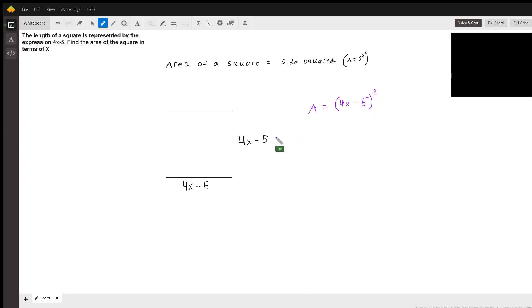Now from here, a classic mistake that students might make is to say that (4x-5) squared is the same thing as 4x squared minus 5 squared, or 16x squared minus 25. And that's not the correct answer.